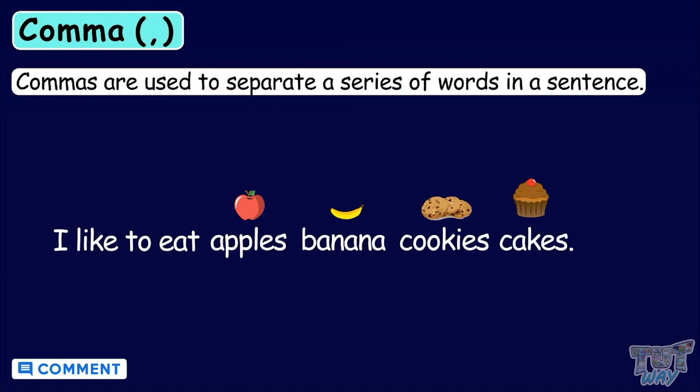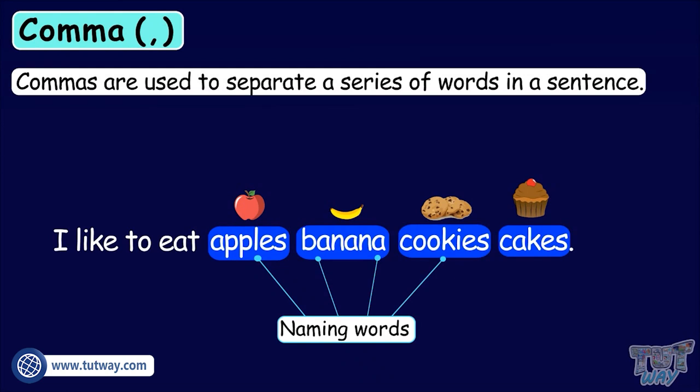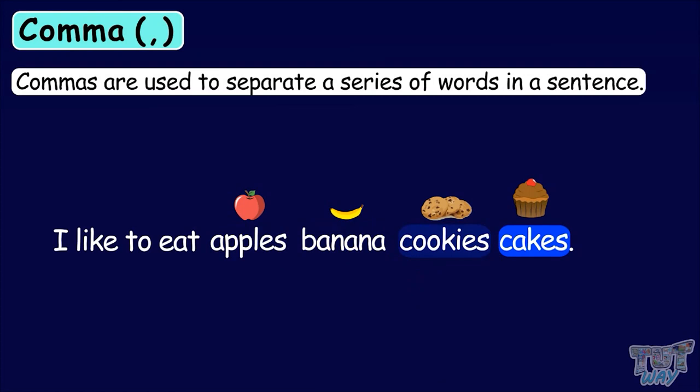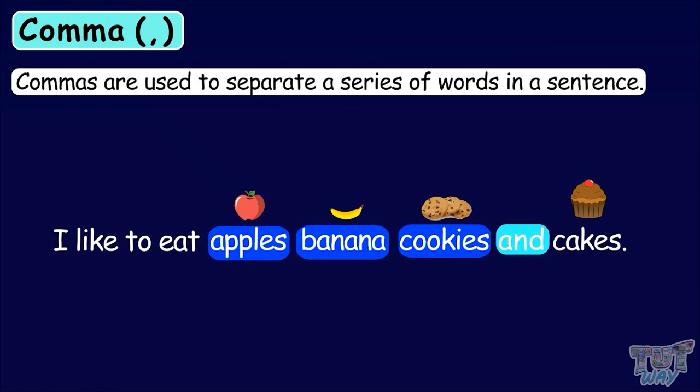Here we have four naming words or four nouns in a series: apples, bananas, cookies, and cakes. Cookies and cakes are separated by means of the conjunction AND, but the nouns apples, bananas, cookies will be separated by commas.